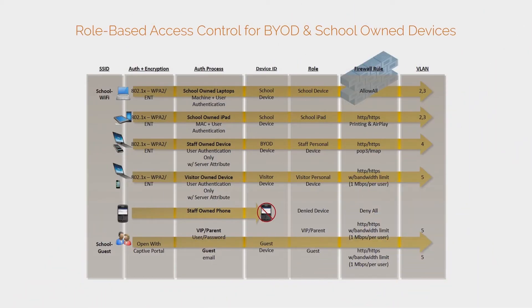We're showing a diagram here of what role-based access control and how it is applied. To give you an idea, we're using a school wireless network as an example. So we have two SSIDs. We have a school Wi-Fi. We have a school guest.